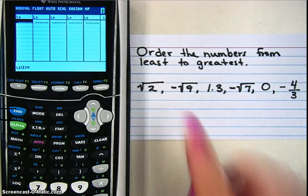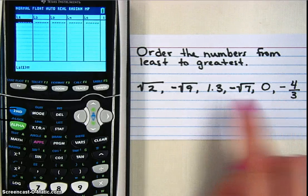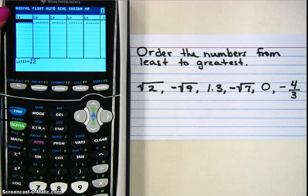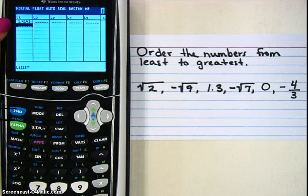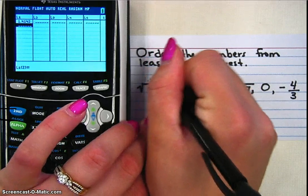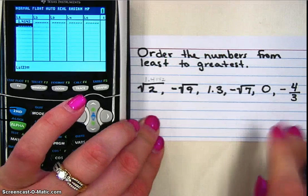So now I want to type in the numbers I currently have. So the first number I have is the square root of 2. Now notice when I type it in, it gives me a decimal. So I'm going to write that decimal down above my number. This way I know what number that is.